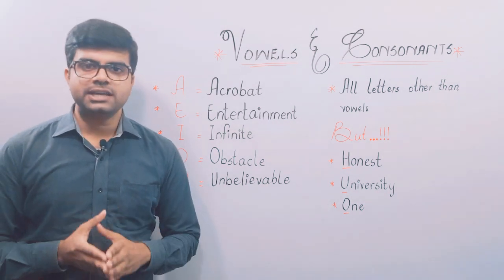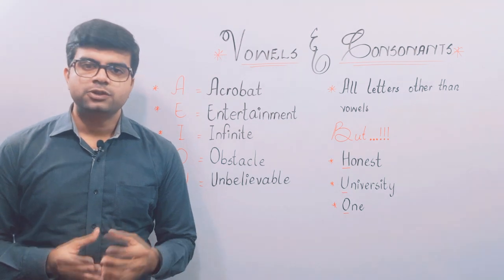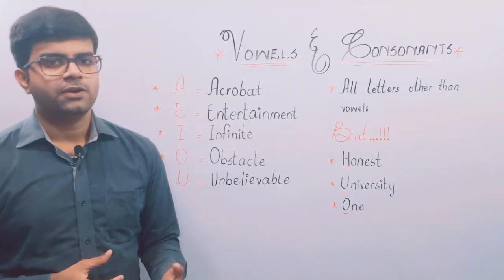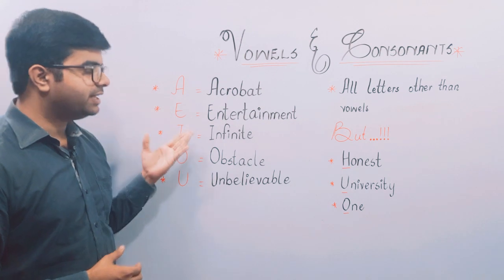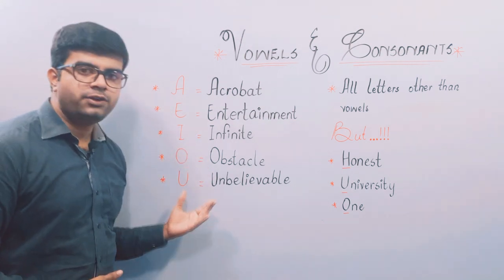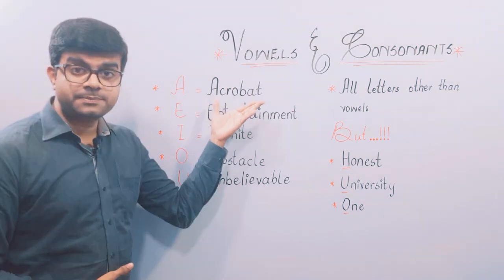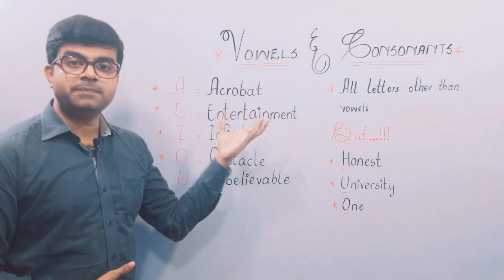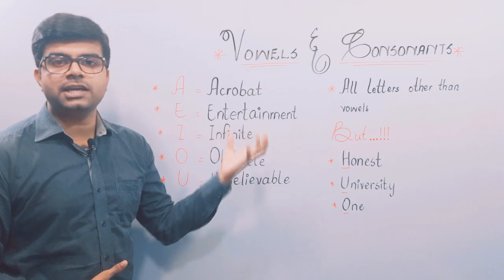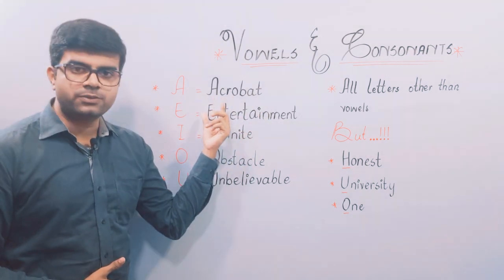So if we look at vowels in English, there are five vowels: A, E, I, O, and U. For example, 'acrobat' — acrobat starts with the A sound, which is a vowel.